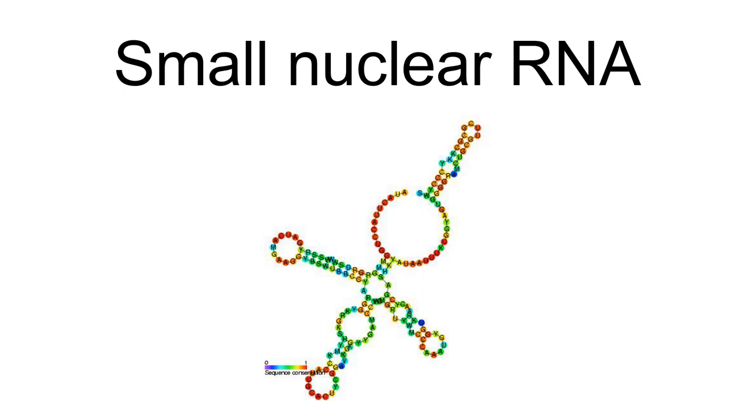Small nuclear RNA, snRNA, is a class of small RNA molecules that are found within the splicing speckles and Cajal bodies of the cell nucleus in eukaryotic cells.